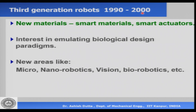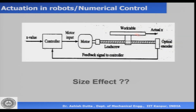The third revolution is essentially because of new materials — new actuators, interest in emulating biological design paradigms, and new areas like micro and nanorobotics, vision, and biorobotics. Smart materials-based actuators and sensors gave the ability to make very, very small robots — micro robots and nanorobots — and enabled actuation in different ways. For example, you could not make a DC motor which is very, very small. This is an interesting example of what we call the size effect.